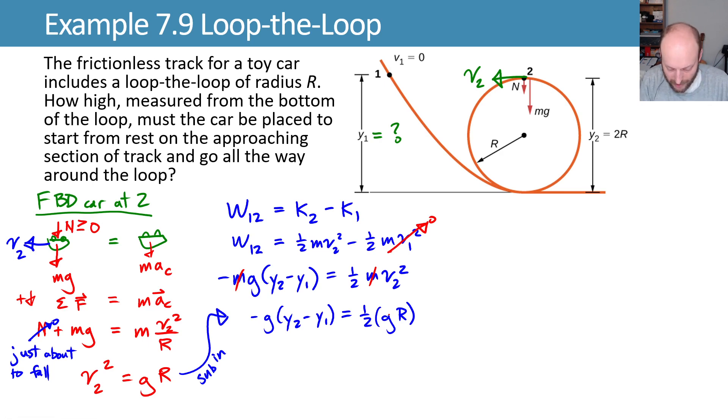Now we can divide by g on both sides. And remember the thing we want to know is we want to know what y1 is. Let's keep doing some algebra and see if we can get there. I'm going to distribute this negative to get negative y2 plus y1 is equal to 1/2 the radius.